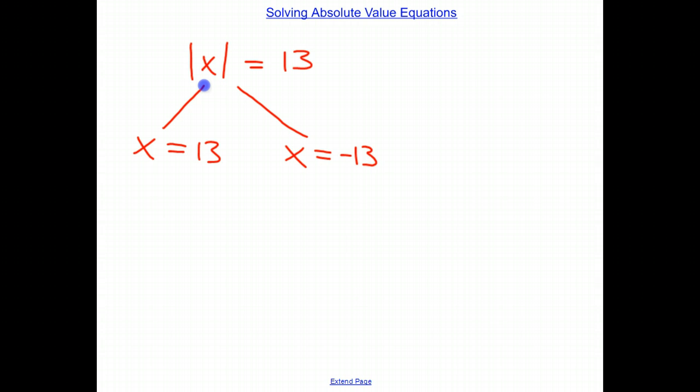The other thing I know that the absolute value of x could be is negative 13. So here I know that there are two possible outcomes for x. The first of which is 13, the second of which is negative 13. So by splitting the problem up into two different parts, I can get rid of the absolute value and solve for x.